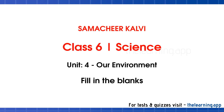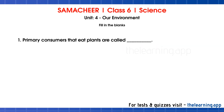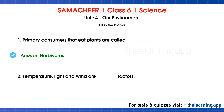Next, fill in the blanks. First question: primary consumers that eat plants are called herbivores. Animals that eat other animals are called carnivores, and animals that eat both plants and animals are called omnivores. Second question: temperature, light, and wind are physical factors.